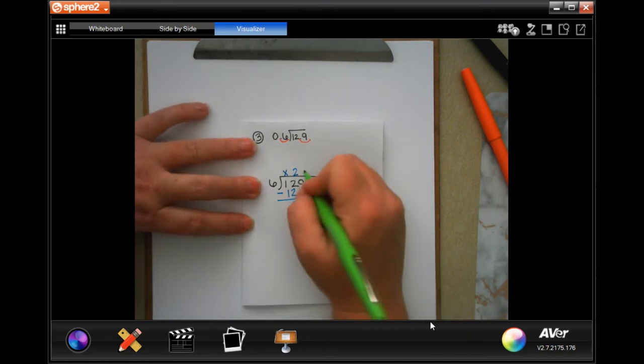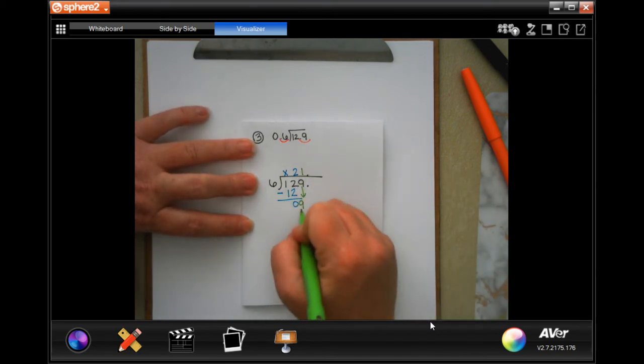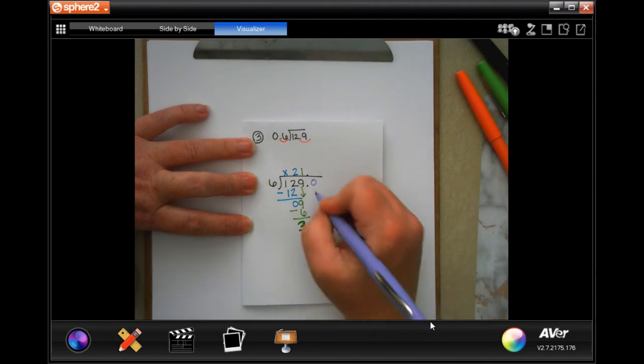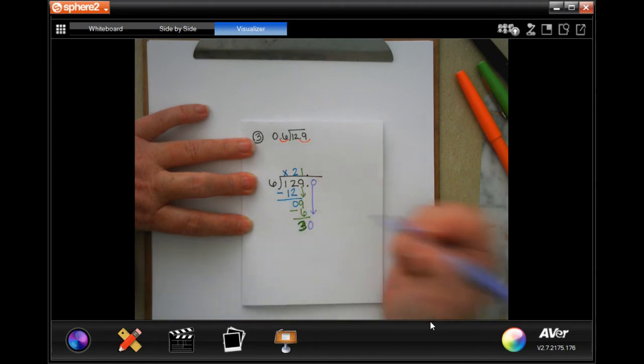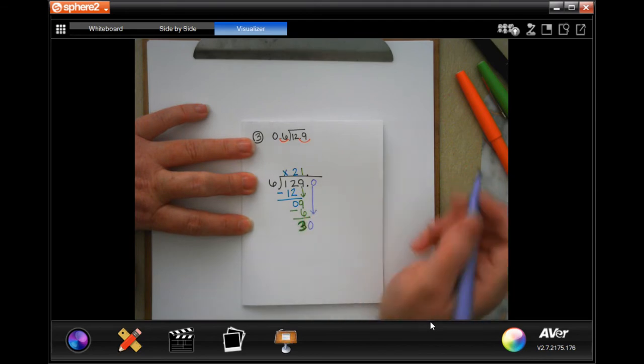Now six goes into nine one time. One times six is six. Subtract. Not zero. Sorry. Three. Now, here is where I add that zero, and I bring it down, because three is smaller than six, so I can add a zero and bring it down. It's after the decimal point, so I can add that zero.